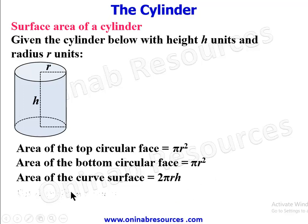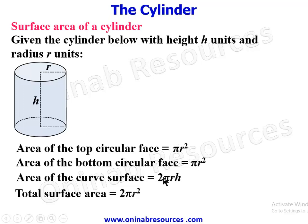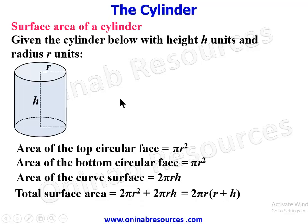The total surface area is the area of the top circular face plus the area of the bottom circular face plus the area of the curved surface, giving us 2πr² + 2πrh. This can be factorized since 2πr is common, giving 2πr(r + h). This represents the total surface area of any solid cylinder that is closed at both ends.